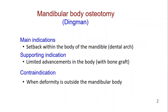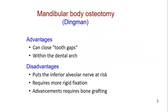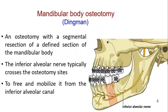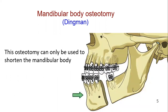It is mainly used for setback within the body of the mandible, as it has the advantage of being within the dental arch, therefore it can close tooth gaps. A mandibular body osteotomy is an osteotomy with a segmental resection of a defined section of the mandibular body. The inferior alveolar nerve typically crosses the osteotomy sites and the bony piece which has to be resected. This osteotomy can only be used to shorten the mandibular body.